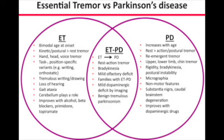Essential tremor versus Parkinson's: essential tremor affects head and voice, is intentional and postural, worse with movement and stress, relieved with alcohol, propranolol, and primidone, and is usually bilateral and symmetrical. Parkinson's is a resting tremor, worse at rest and with stress, relieved with voluntary activity and sleep, and importantly usually starts unilaterally on one side.